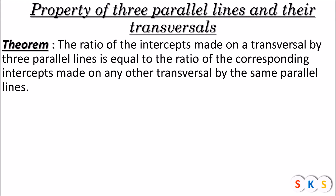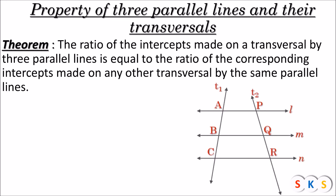In this theorem, you can see there are three parallel lines and there are two transversals for those three parallel lines. Here we have a figure. You can see that line L, line M, and line N are parallel to each other, and T1 and T2 are the two transversals of those three parallel lines.